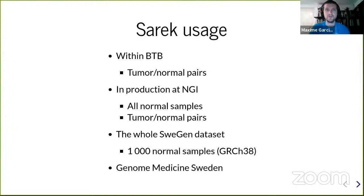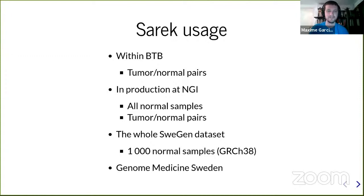We use SARIC a lot in Sweden — at the Biobank we use it to analyze all our tumor and normal samples, and at NGI we use it to process all normal samples and tumor-normal pairs. It was also used to analyze 10,000 normal samples from the three-gen dataset. We are working with GMS (Genome Medicine Sweden) to develop tools to analyze cancer samples as well.